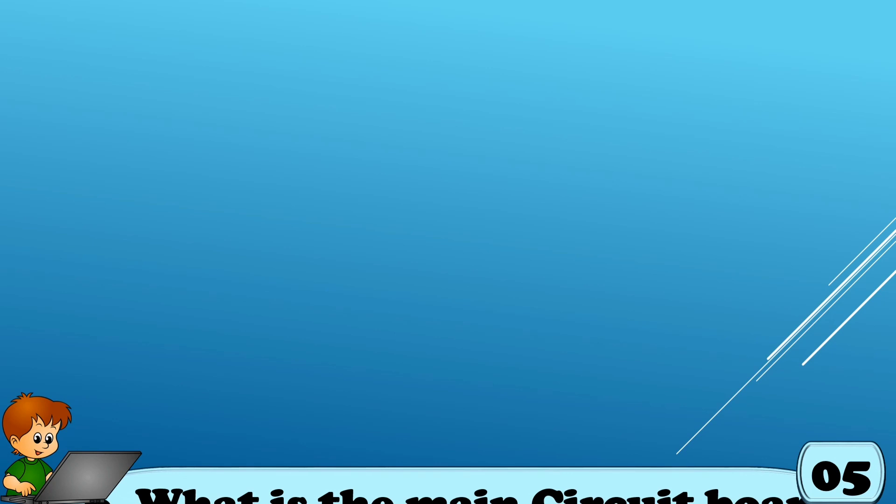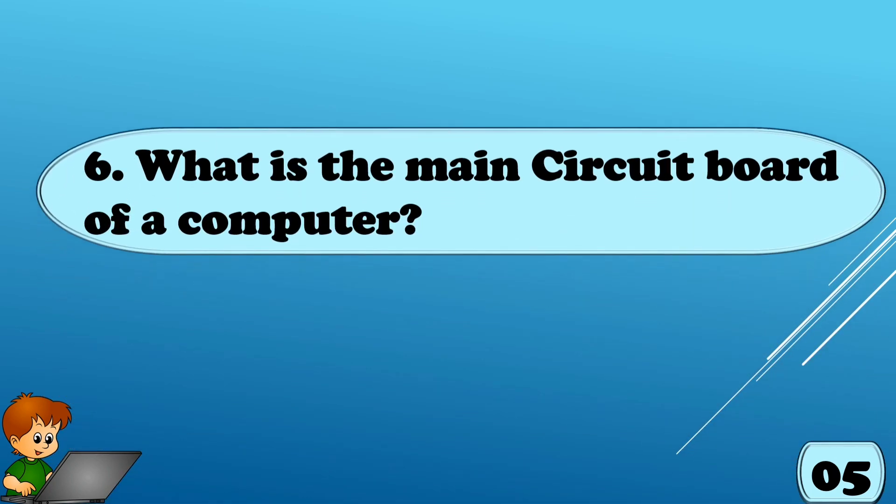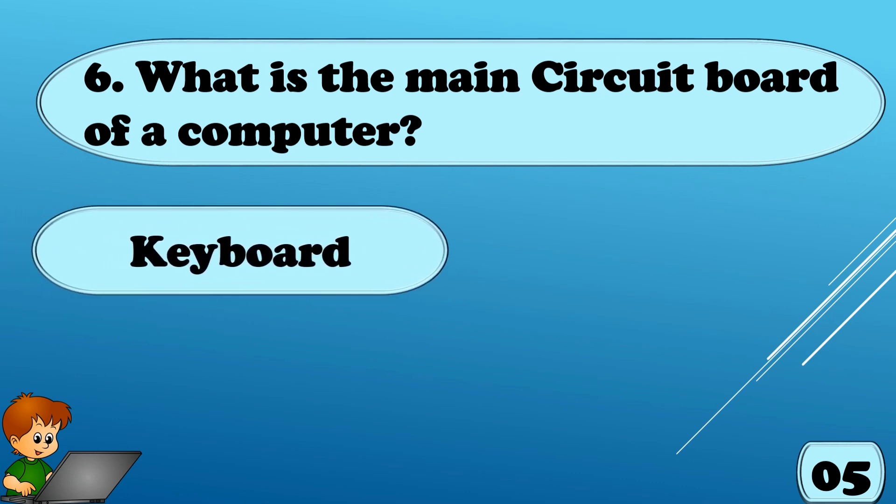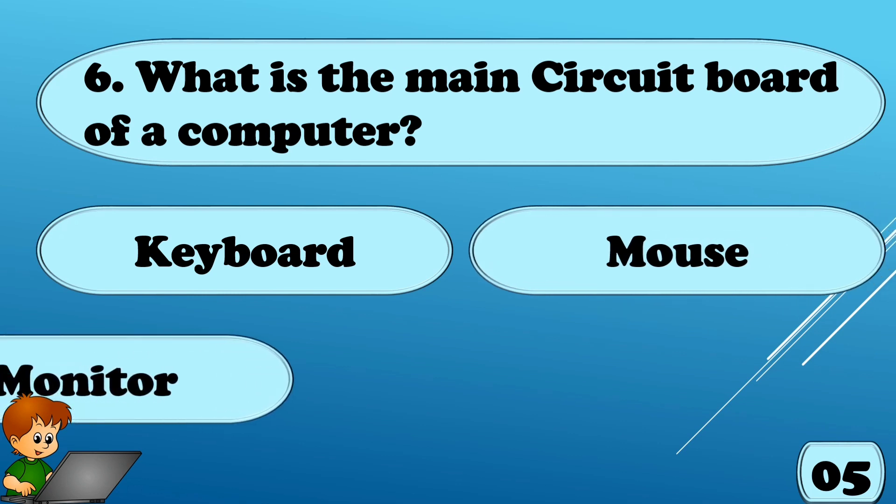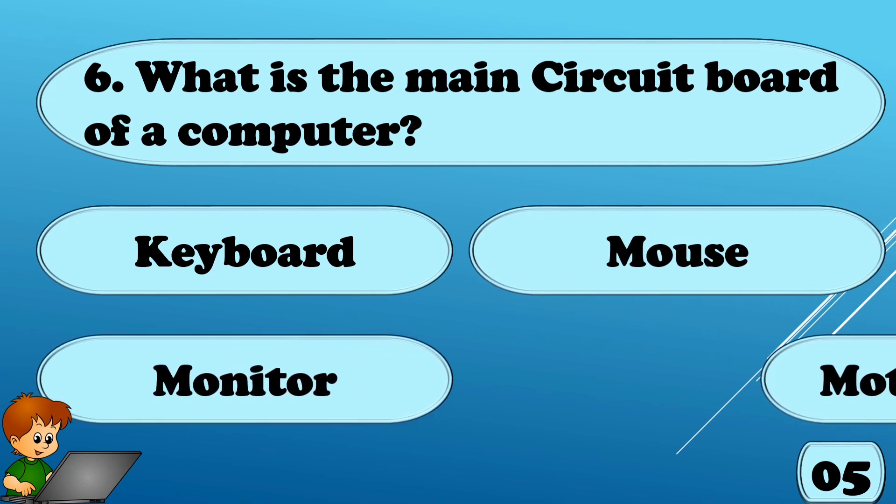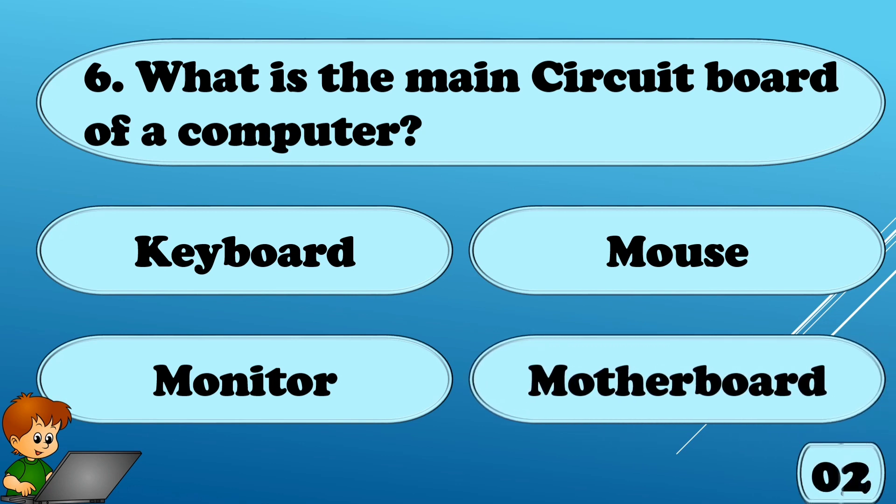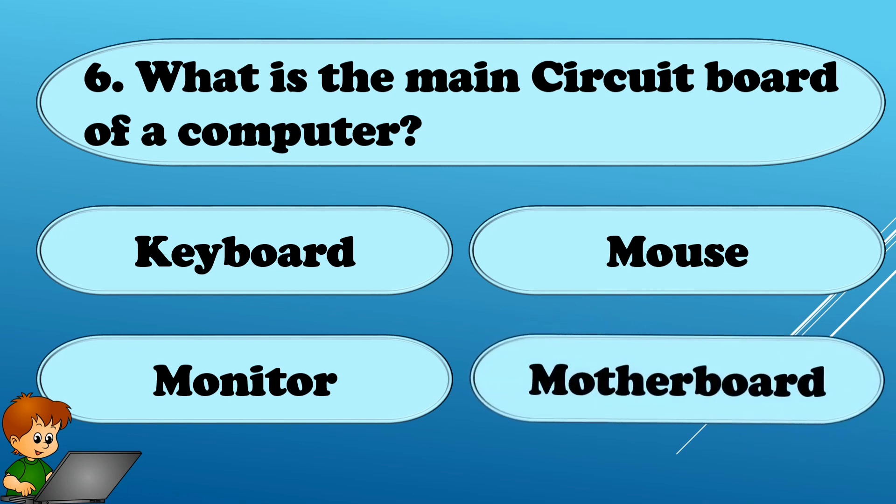What is the main circuit board of a computer? Options are A. Keyboard, Option B. Mouse, Option C. Monitor, or Option D. Motherboard. The right answer is Motherboard.